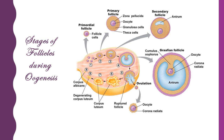The antrum grows in size as the secondary follicle becomes the Graafian follicle, eventually occupying most of the space inside the Graafian follicle. The follicular cells of the Graafian follicle are endocrine in nature and secrete a female sex hormone called estrogen. The Graafian follicle then undergoes rupture to release the secondary oocyte during ovulation. After ovulation, the Graafian follicle transforms into a yellow body called the corpus luteum, which secretes two female sex hormones: estrogen and progesterone.